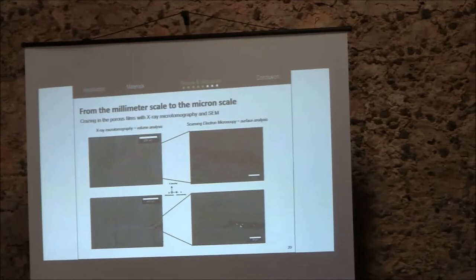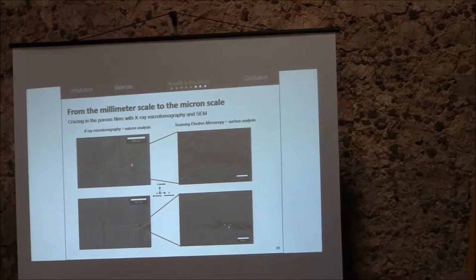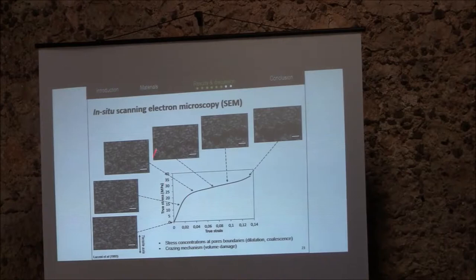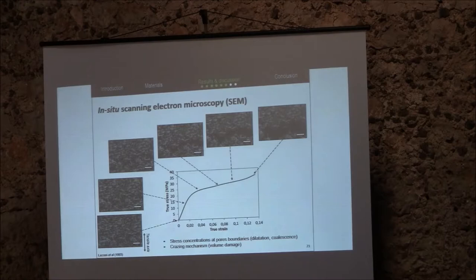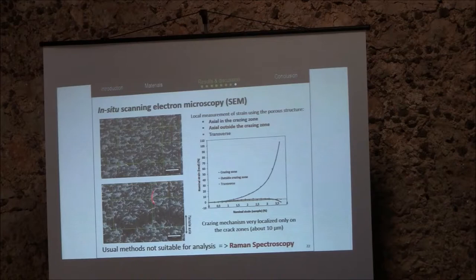From the millimeter scale to the micron scale by SEM, we can observe the occurring cracks. The true stress curve as a function of true strain shows the elastic domain, the plastic domain, and up to the break, including the initiation of the crazing mechanism. We see stress concentration at pore boundaries and a crazing mechanism due to volume damage. However, SEM can only scan zones of about 10 by 10 microns at minimum, and the cracks were occurring in smaller zones, so SEM is not sufficient as a technique to follow these cracks.